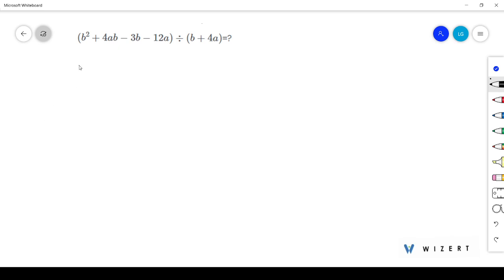Our question is: do the given polynomial division. We have to divide b² + 4ab - 3b - 12a divided by